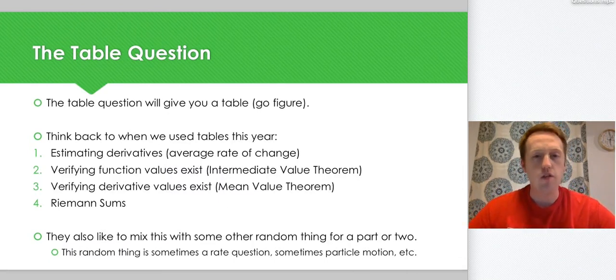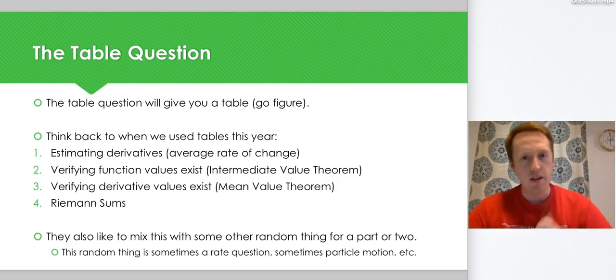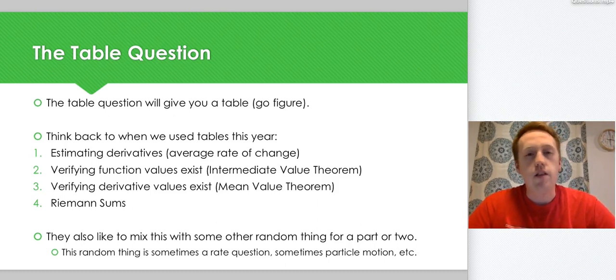It gives you a table of values, and the things that we've really used a table for this year in AP Calculus is estimating derivatives, which was average rate of change F of B minus F of A over B minus A, verifying that function values exist, which is intermediate value theorem, verifying derivative values exist, which is mean value theorem, and doing Riemann sums.